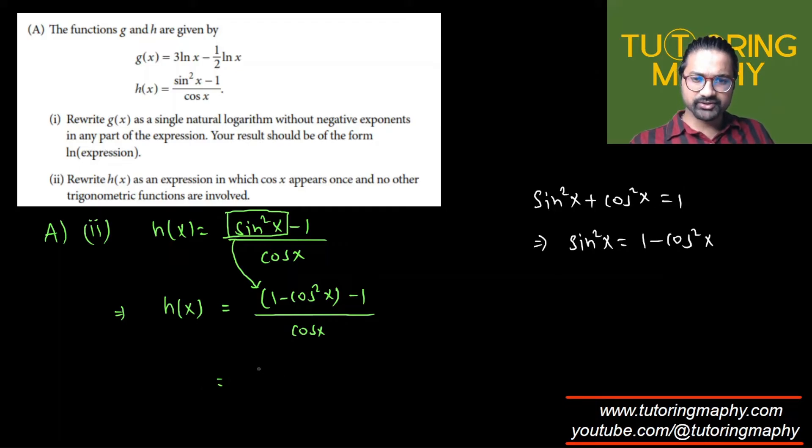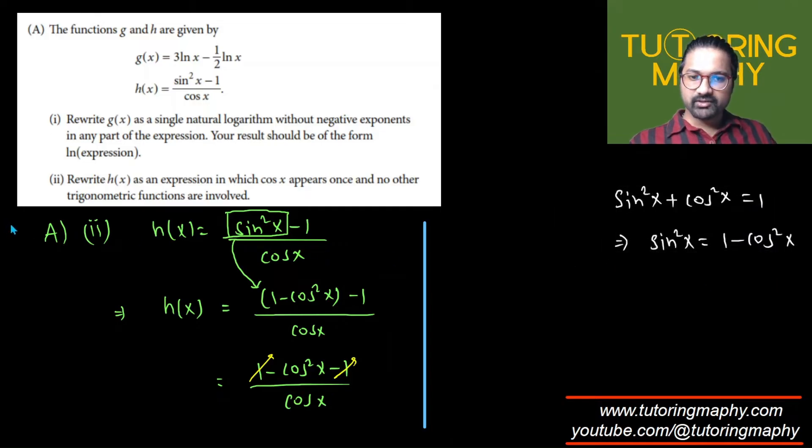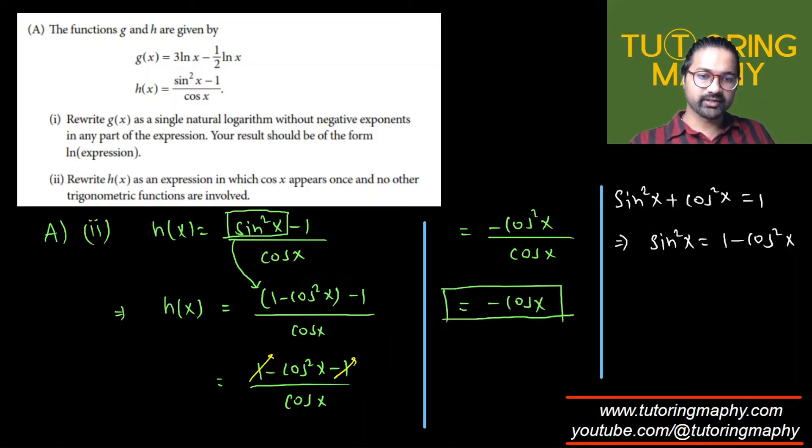If you open up the parentheses, that's going to look like 1 - cos²x - 1 over cos(x). Unfortunately, this 1 and negative 1 is gone. So what we are left with now will be -cos²x over cos(x). And obviously cos²x over cos(x) means one of the cos(x) will be gone. The final expression is just negative cosine of x. That is our final answer.